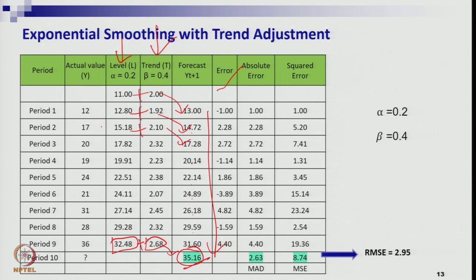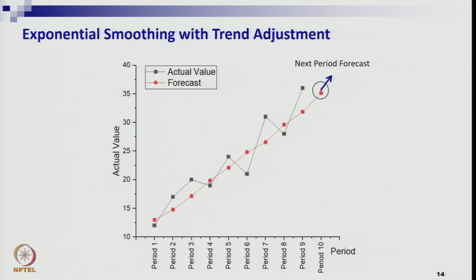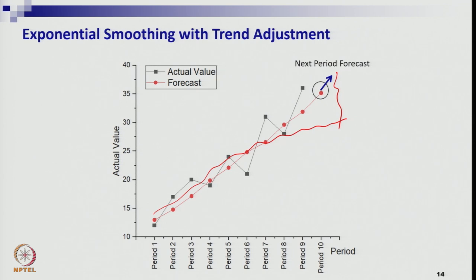The corresponding error can be calculated as actual minus forecast. MAD is the average of absolute errors; MSE is the average of squared errors; RMSE is the square root of MSE — all already discussed in the measure of accuracy session. Looking at the graph, you can see how accurately the Holt model makes forecasts as per the data pattern. If you had used simple exponential smoothing, the forecast would have followed a flatter line with more error.